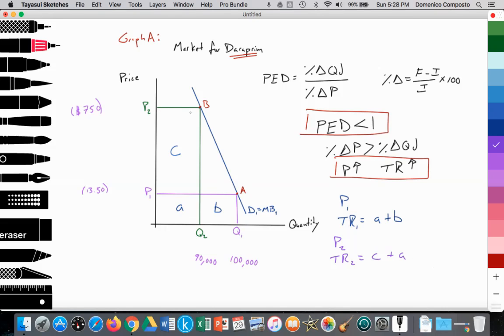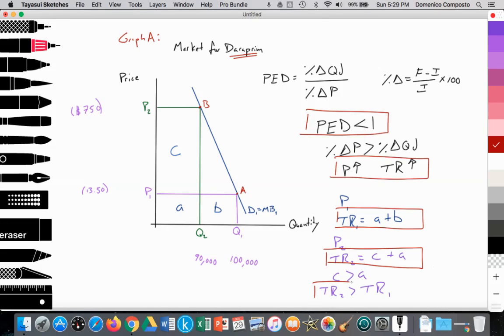And because area C is greater than area B, this firm has increased their total revenue. So total revenue 2 is greater than total revenue 1. So total revenue 1 being areas A plus B and total revenue 2 being area C plus A. Because area C is greater than B, total revenue 2 is greater than total revenue 1.